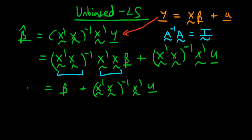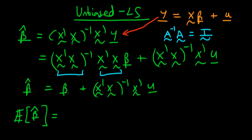That's the general form of our least squares estimator — I haven't made any assumptions yet. Now we have to find the expectation of beta hat. The expectations operator is just a linear operator, and this first term, beta, is just a constant, so the expectation of a constant is just itself.